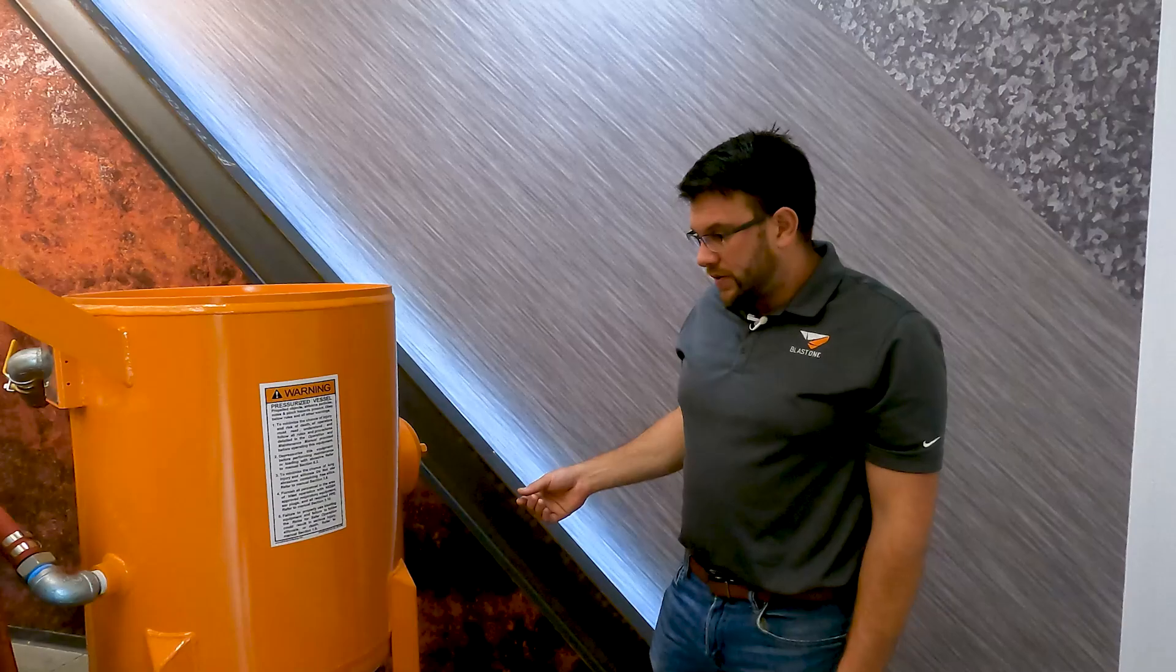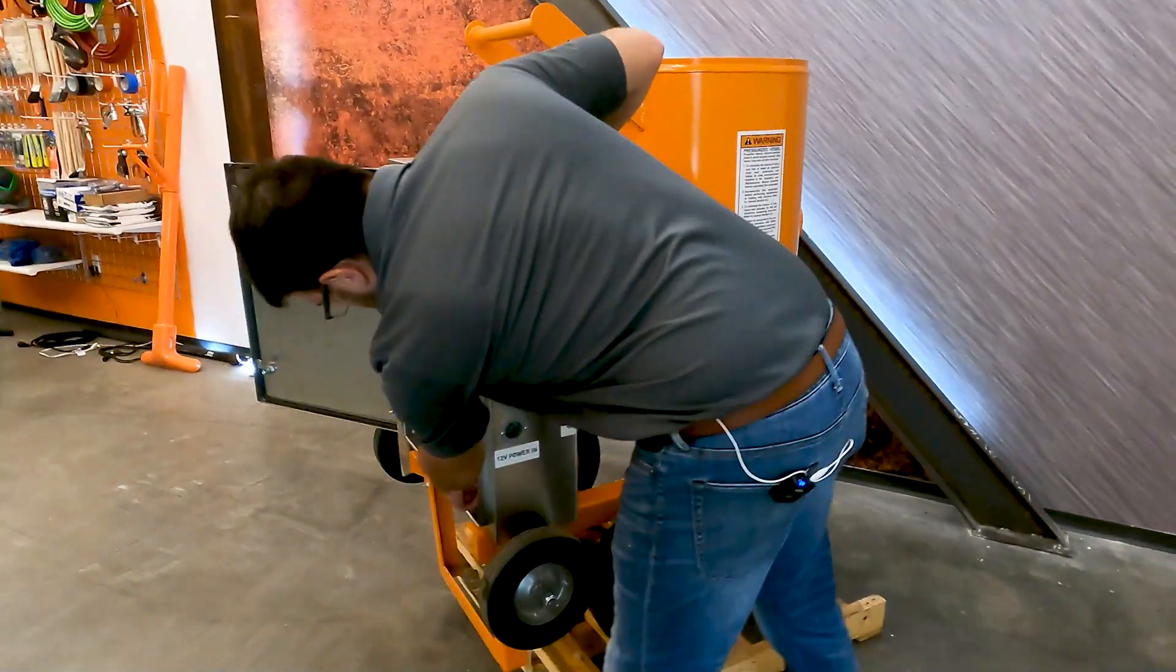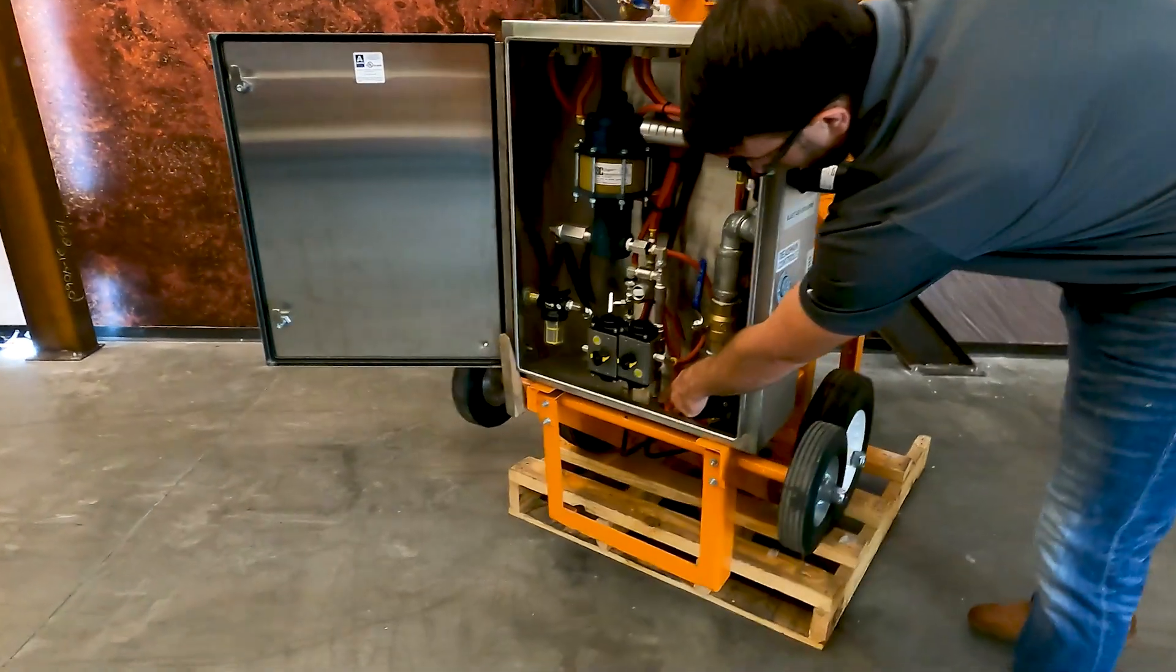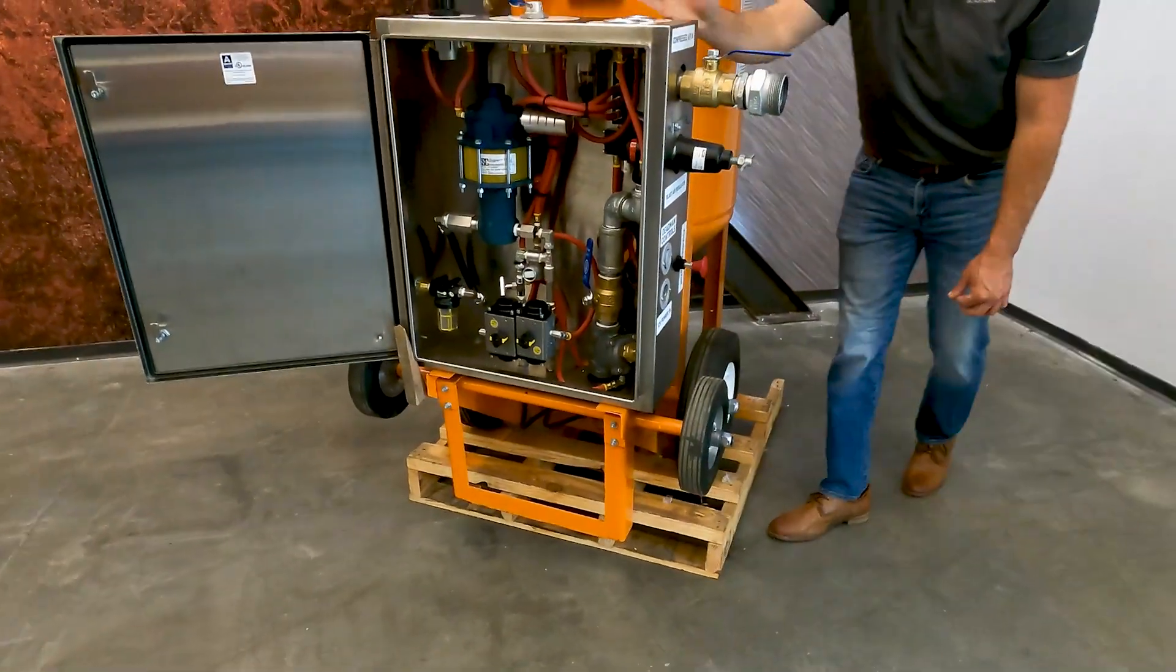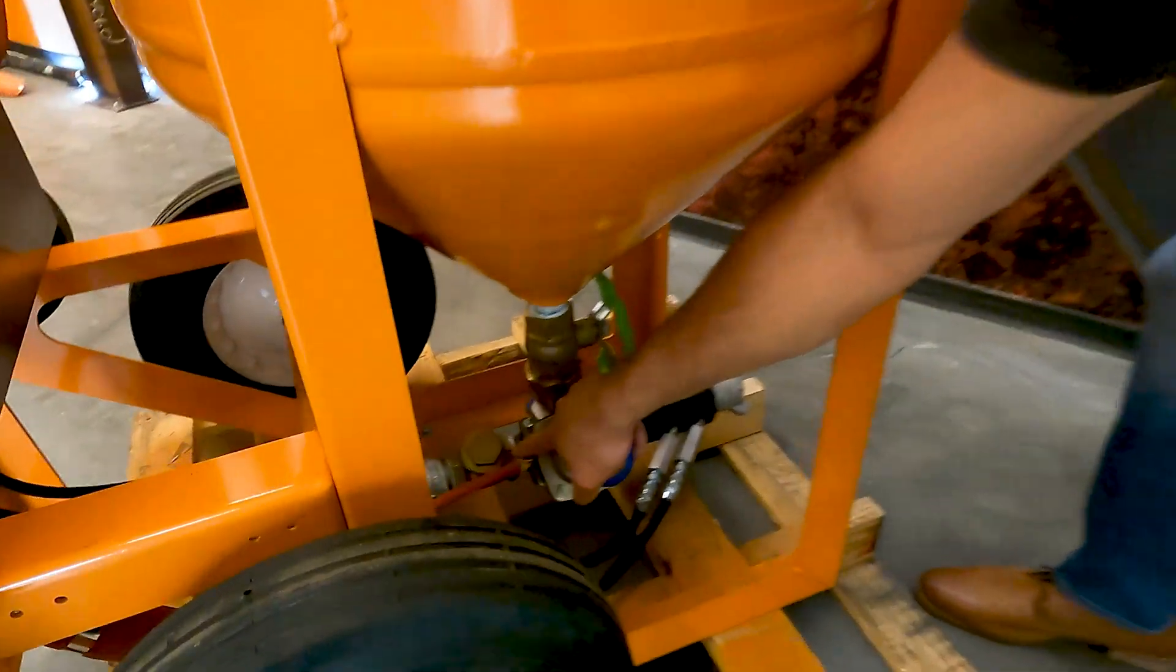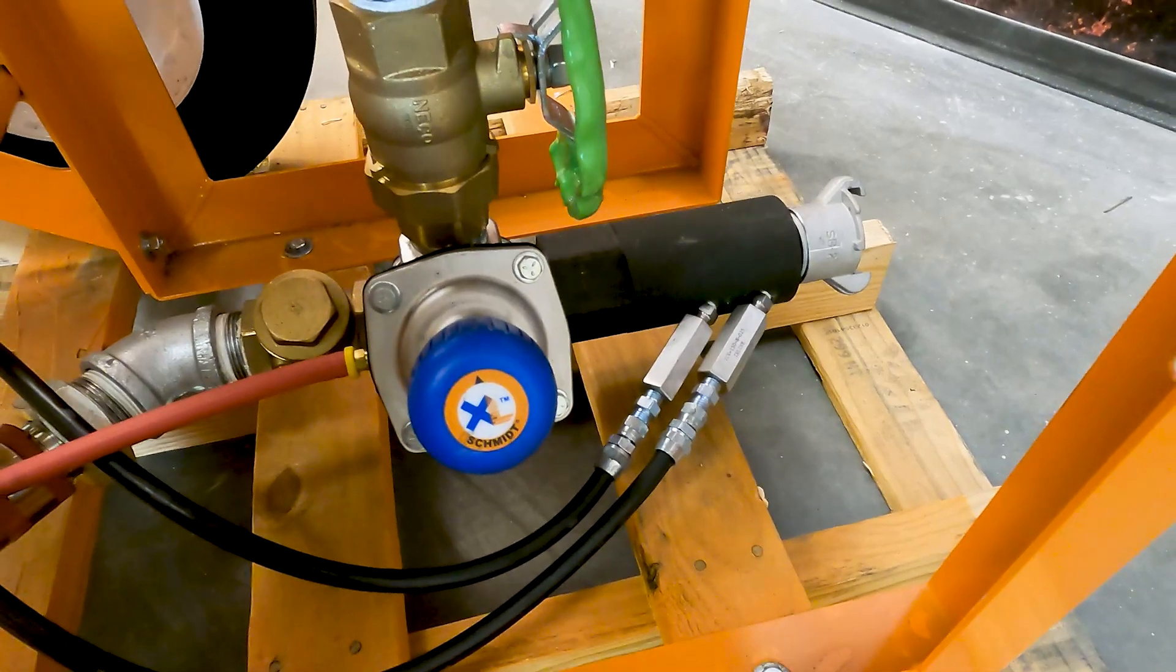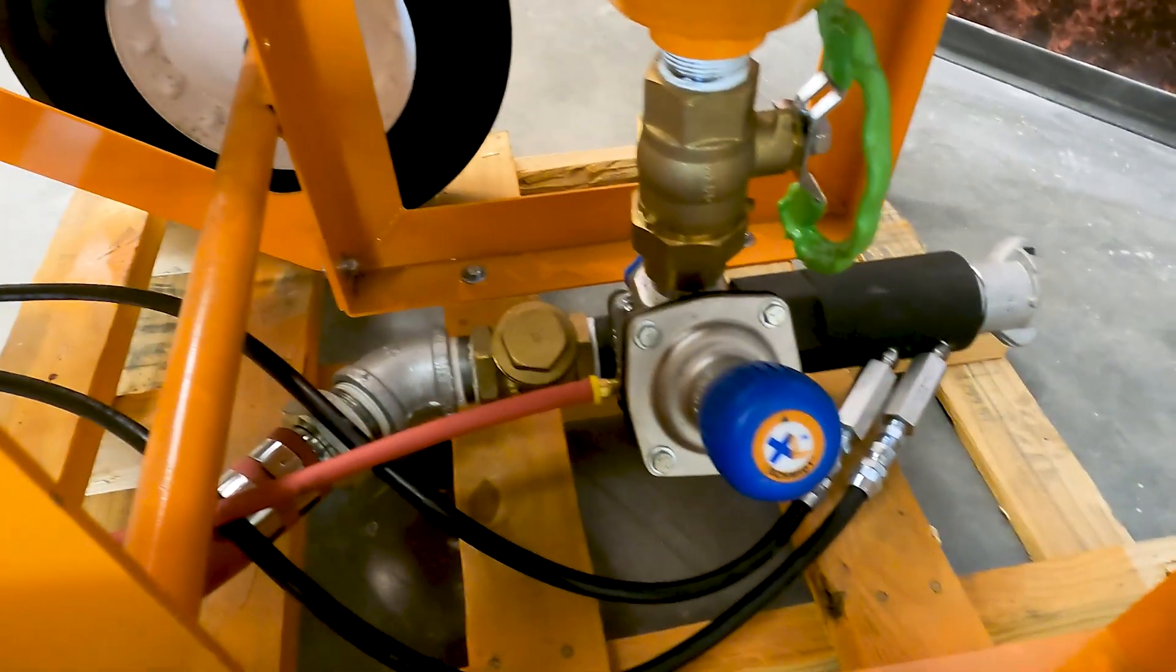So we installed several check valves throughout the system. We have check valves over here, underneath the air actuated ball valves for the water system, a main check valve before the metering valve here, and two more check valves on the start of the injection lines. And what this does is makes it foolproof for blasting heights.